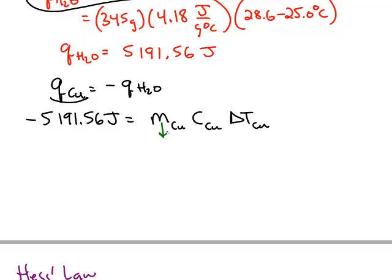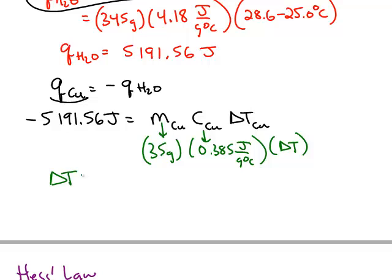The mass of the copper was known in the problem to be 35 grams. The specific heat capacity, 0.385. And the only thing we don't know is delta T for the copper. So we can solve this equation for delta T, and that will get us one step closer to calculating what the initial temperature of the water was. And delta T works out to be negative 385.3 degrees Celsius.